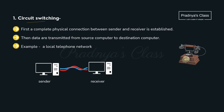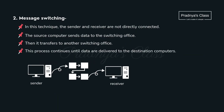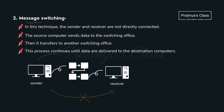In circuit switching, there is a direct physical line between sender and receiver, and the information passes through it. The example is a local telephone network. In message switching, there is no direct physical connection between sender and receiver. First the data is sent to the switching office, and then from the switching office the data goes to the receiver.